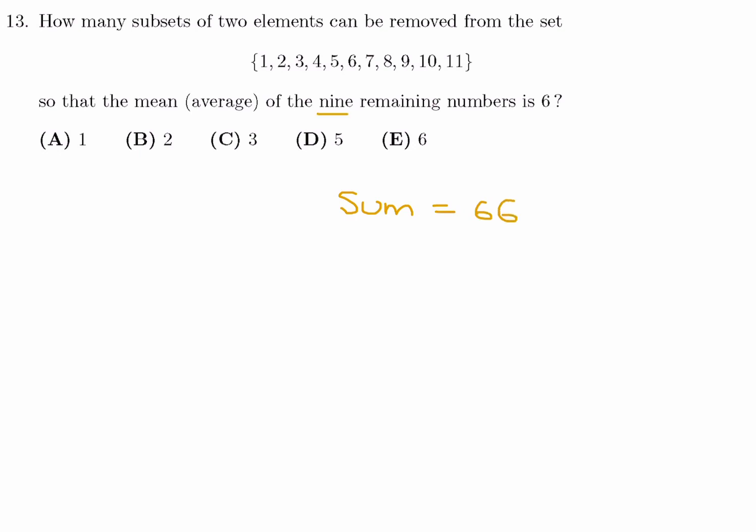Now, they want nine numbers to remain that have an average of six. So that means that those nine numbers would have a sum of 54. So basically, from the total sum of 66, we want to have nine numbers remaining that have a sum of 54. So we've got to get rid of numbers that total 12, which is the difference. And those numbers, there's two of them because it says you have to remove two elements. So two numbers that sum up to 12 is what we have to remove.